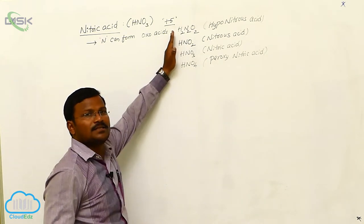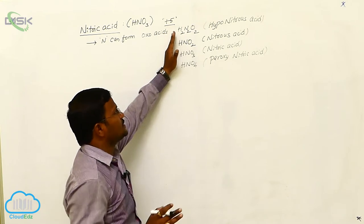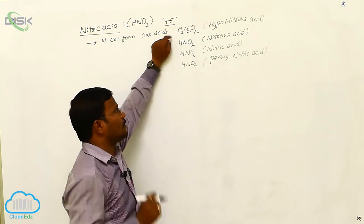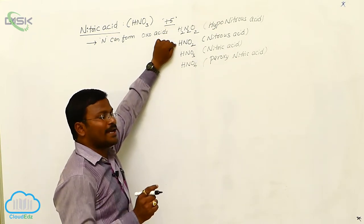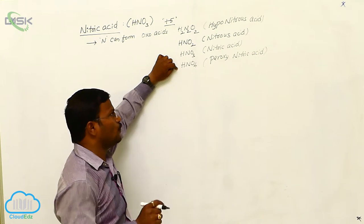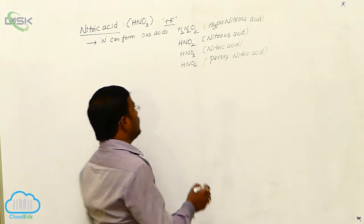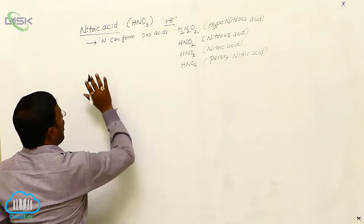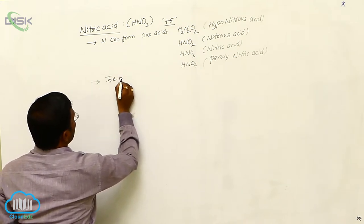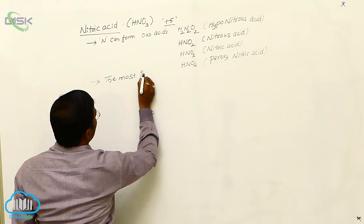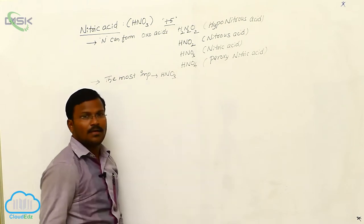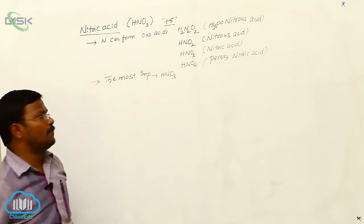Nitrogen can form four oxo acids: hyponitrous acid (H₂N₂O₂), nitrous acid (HNO₂), nitric acid (HNO₃), and peroxynitric acid (HNO₄). Among all four oxo acids resulting from nitrogen, the most important one is HNO₃ — that is nitric acid. So let us learn about the preparation of nitric acid.